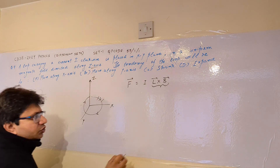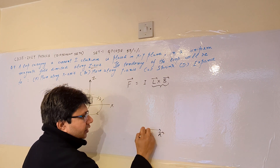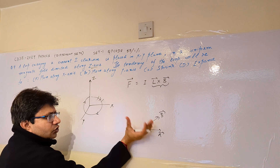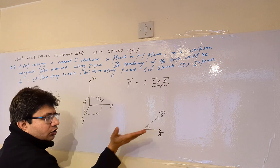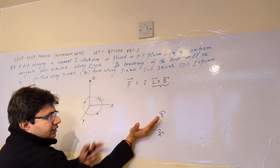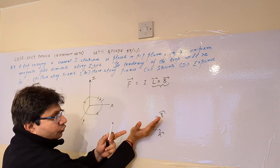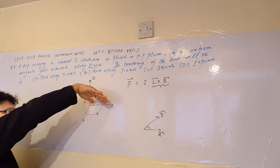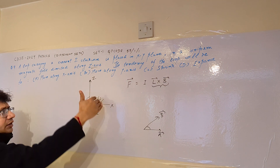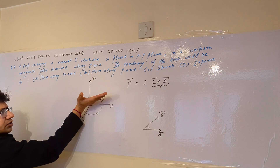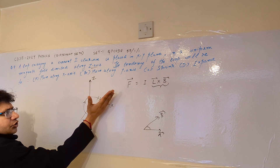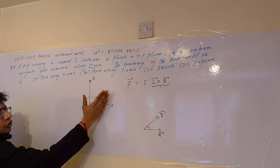The vector cross product states that if we have vector A and vector B, then the direction of A cross B is found as follows: place your hand in the direction of the first vector and move along the second vector — the direction of the thumb gives the direction of force. So if we place our hand along vector L and move it along vector B, the thumb gives us the direction of force.